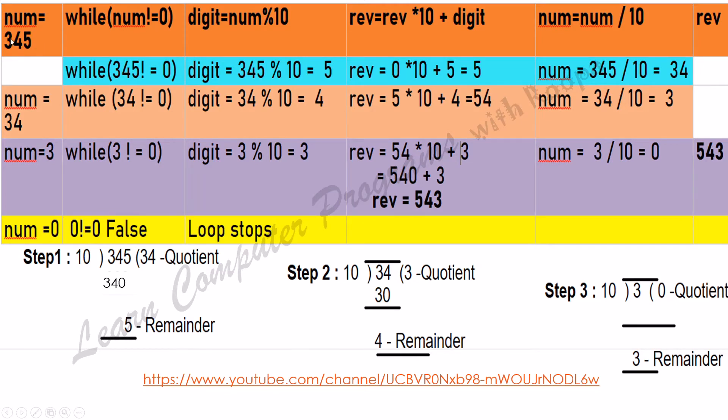So I have num equals 345. While 345 is not equal to 0—345 is definitely not equal to 0—so digit equals 345 mod 10.